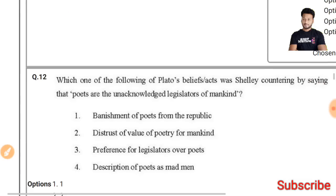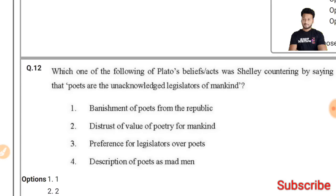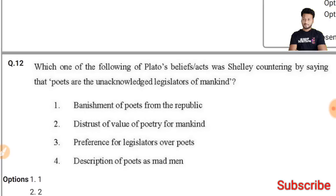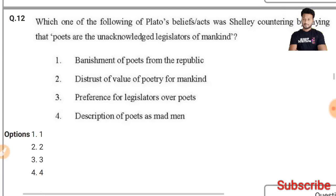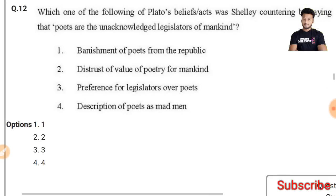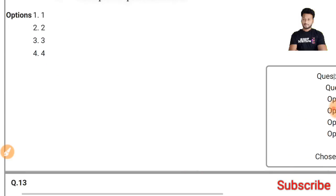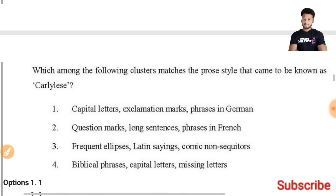Question 12: Which of the following are Plato's beliefs that Shelley counters by saying that poets are the unacknowledged legislators of mankind? There is a little confusion here, but the answer will be 'banishment of poets from the Republic' — the first option is the right answer.